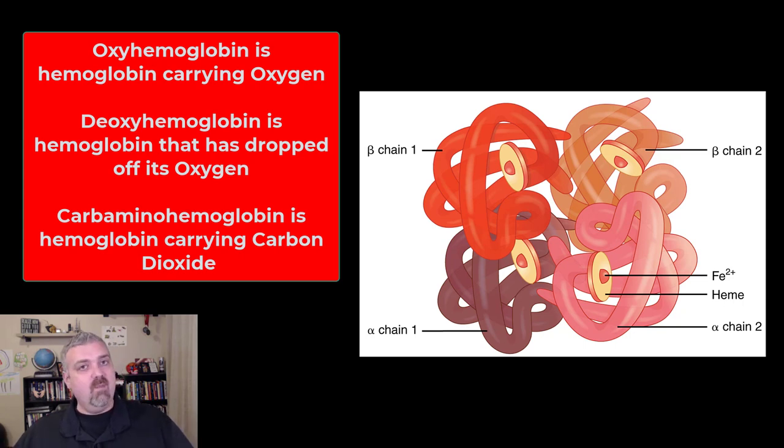But it's all the same hemoglobin. It's just what is it doing with oxygen or carbon dioxide at the time. Once hemoglobin picks up oxygen at your lungs, it's called oxyhemoglobin and it's bright red - the bright red blood you think of.